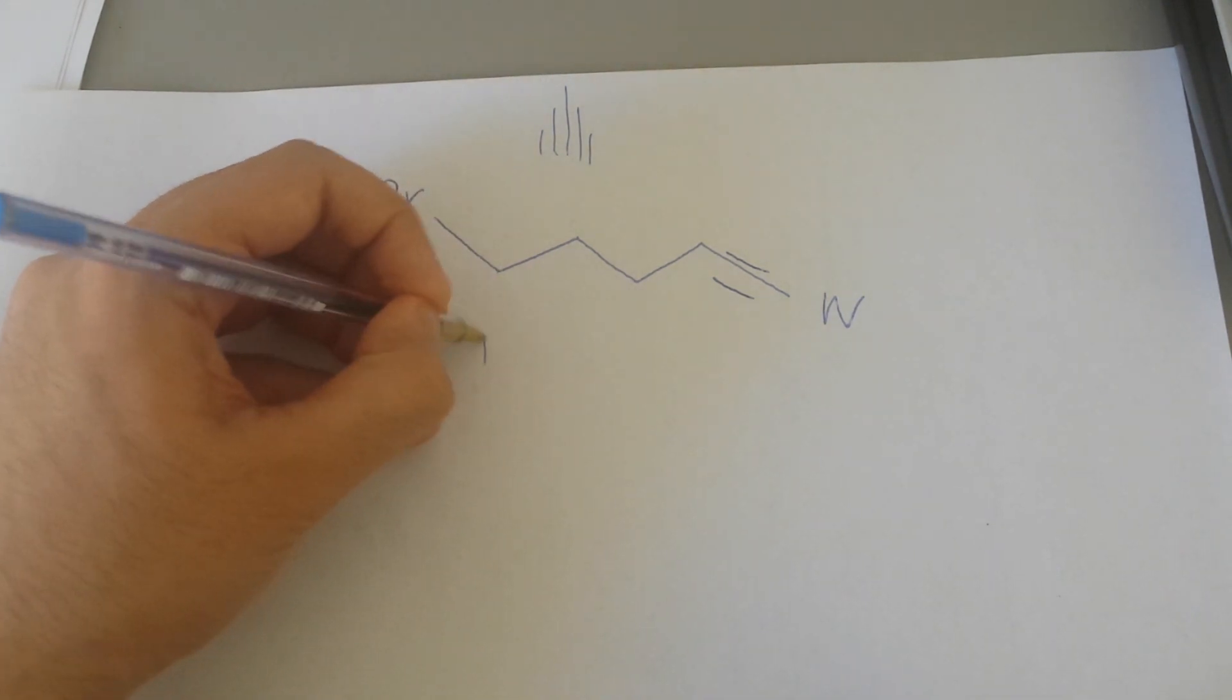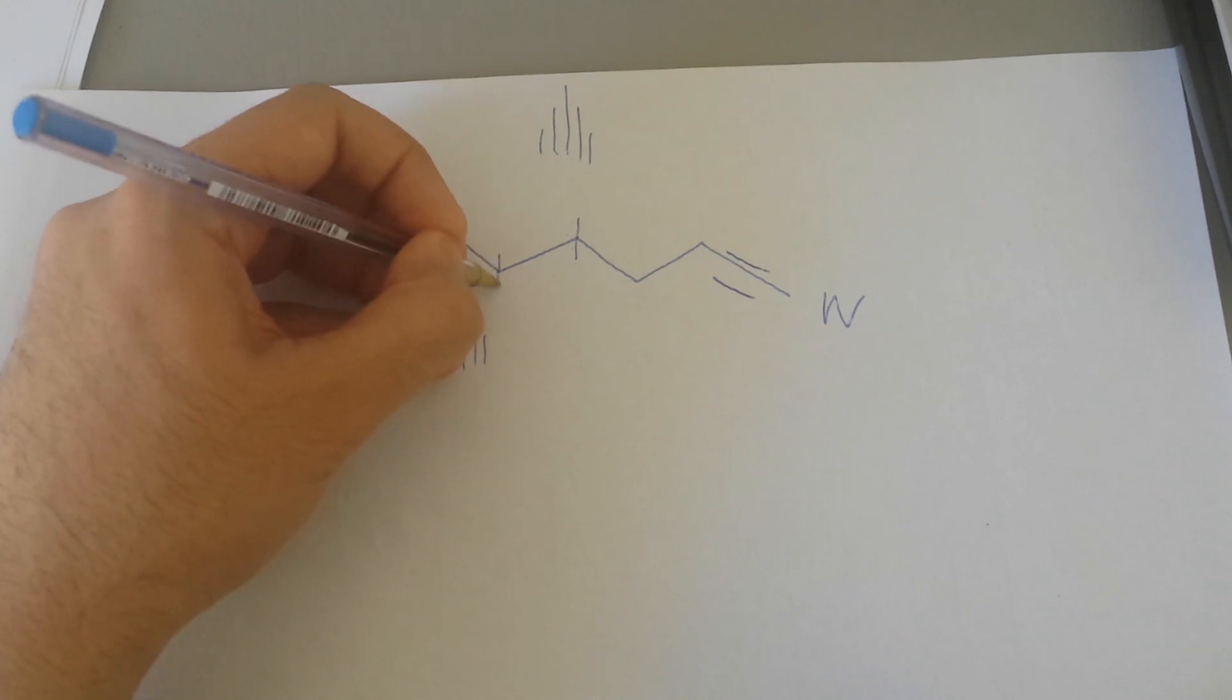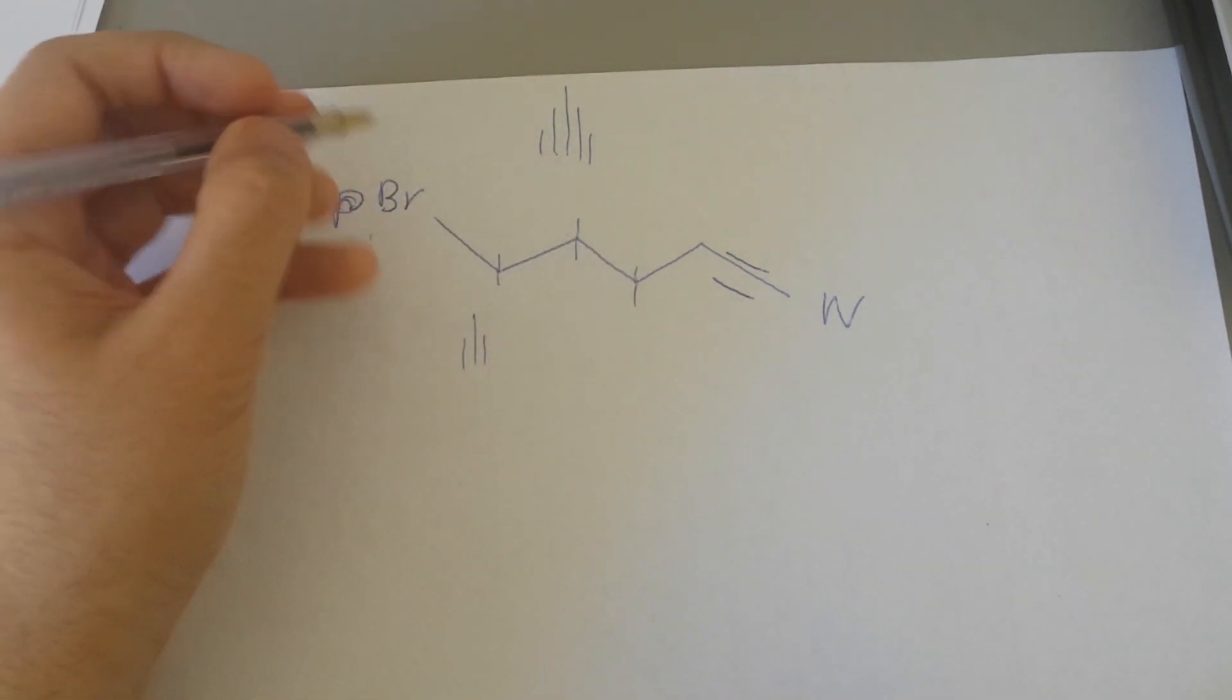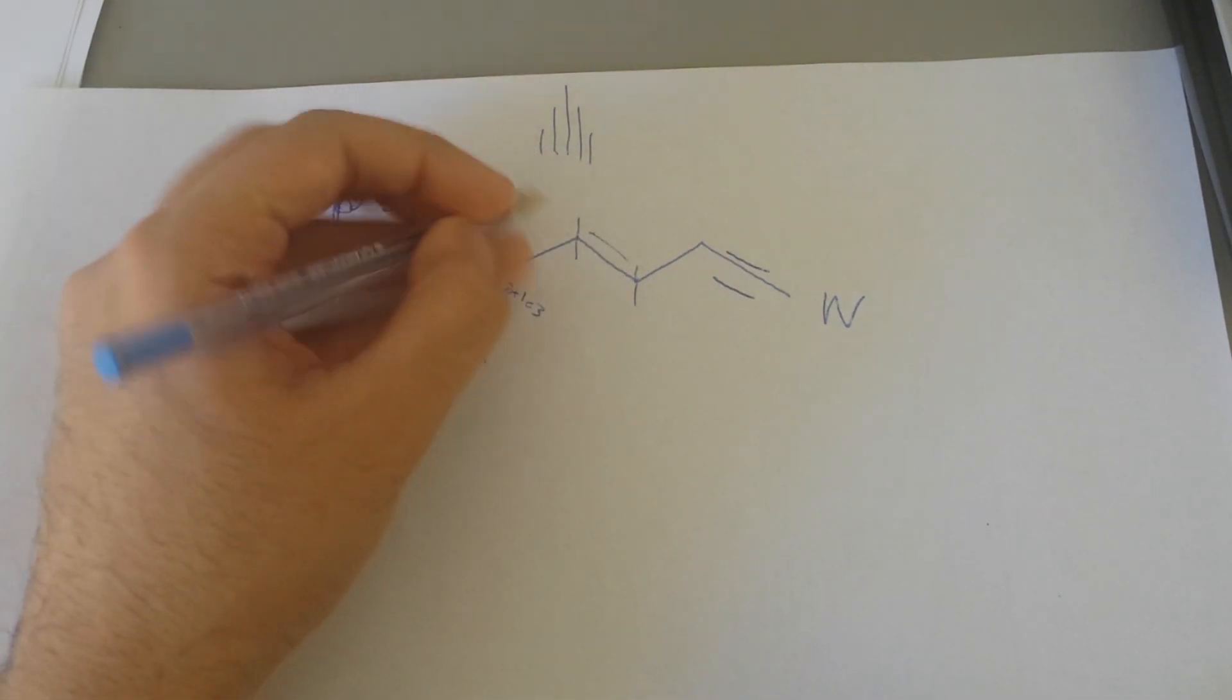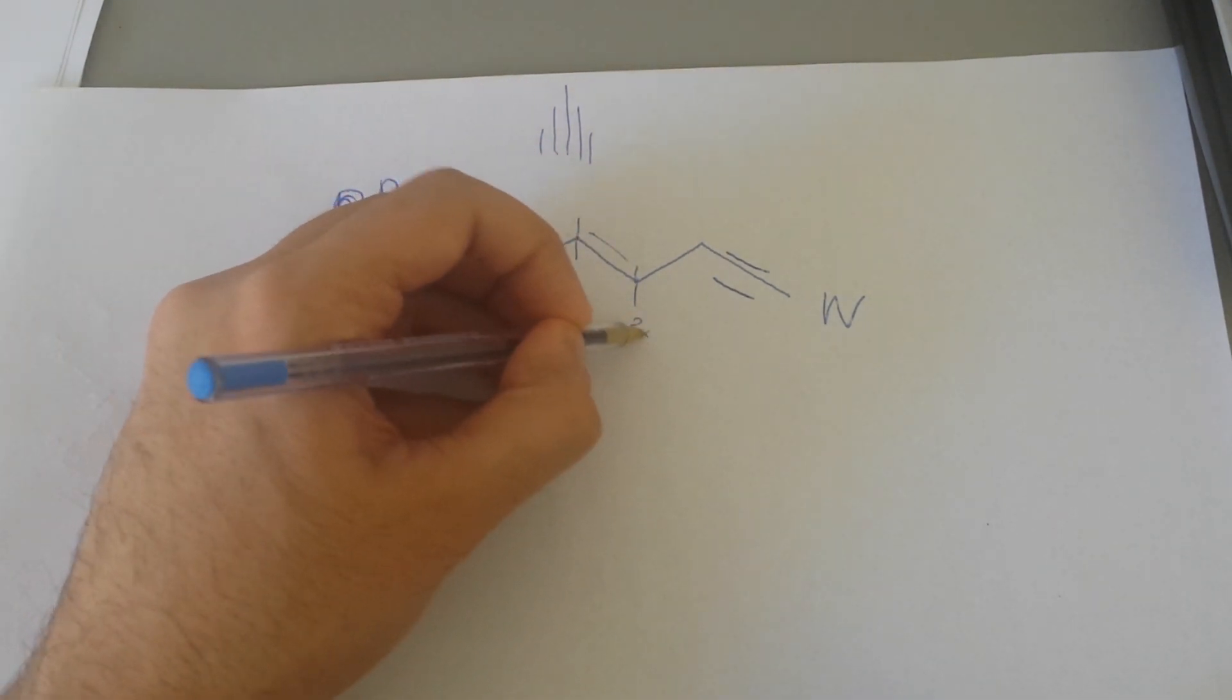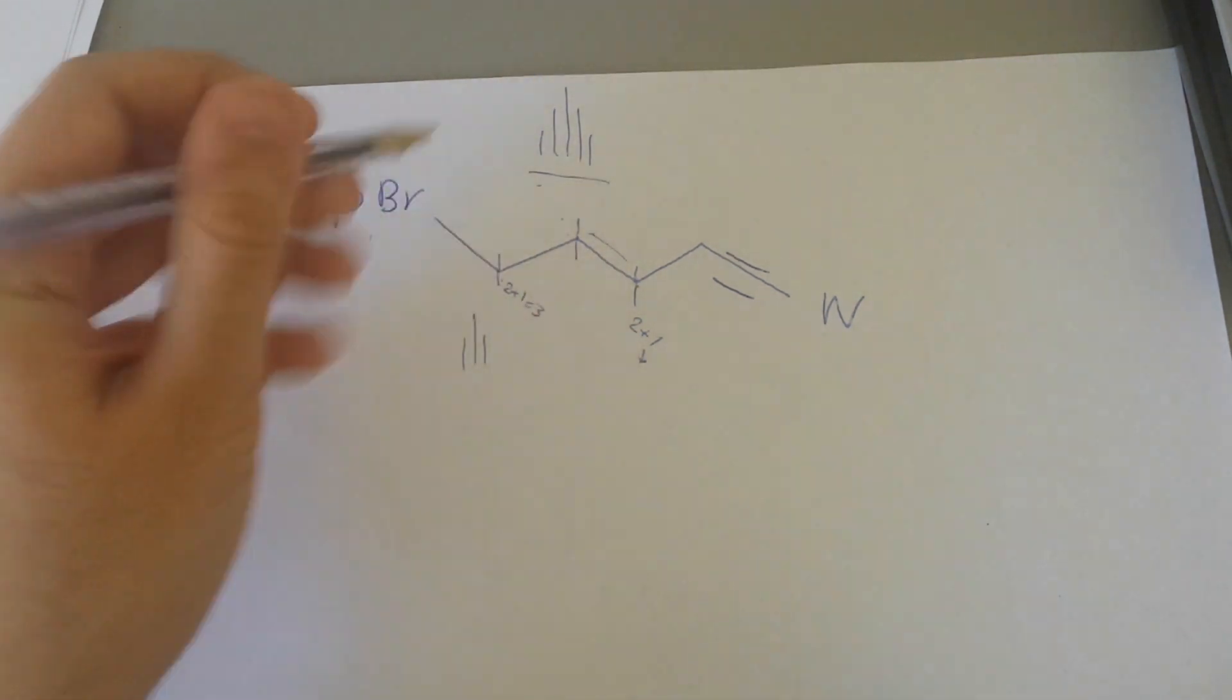Because it's pentet. This was the one that was triplet. Because neighboring with that is CH2. This CH2, this is CH2, this is CH2, neighboring to that is just 2. So with 2 plus 1 triplet, neighboring to that is 2, which is 2 plus 1 is triplet. But here is 2, 2, 4 plus 1, which is 5.